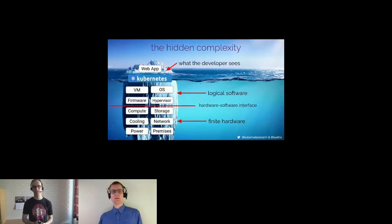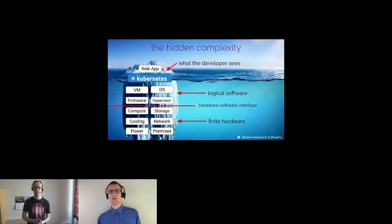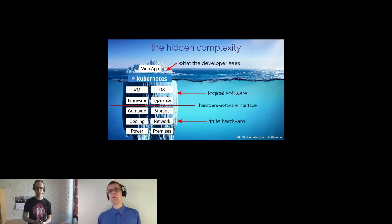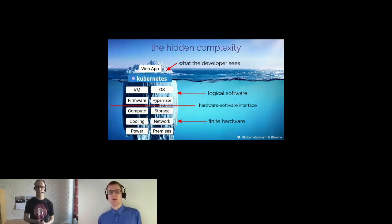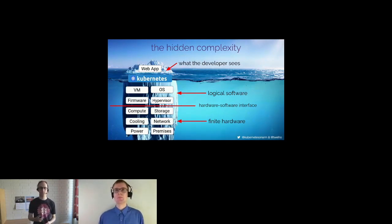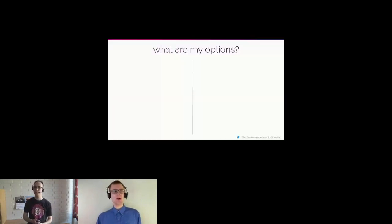Understanding the cloud in a holistic way is really hard. This is a visualization of what you as the user or developer see when interacting with Kubernetes or deploying applications, compared to all of the behind-the-scenes complexity required to run a cloud. In today's ever more complex technology ecosystem, it is crucial to also see the bigger picture — for example, to understand error situations and make better decisions when developing applications. So what are the options when you're in the market for a cloud?